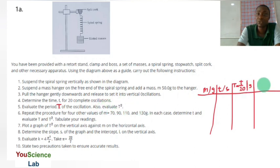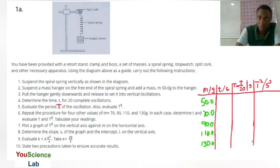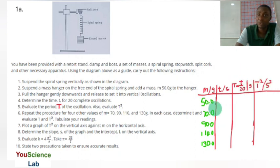Also to evaluate T squared, which is going to be in seconds squared. So this is my composite table comprising the mass, the time, the period, and the square of the period. The period T equals small t divided by the number of oscillations which is 20. It is important that you include all your units — that's very important. The first mass is going to be 50.0 grams, and the masses are included on the table.